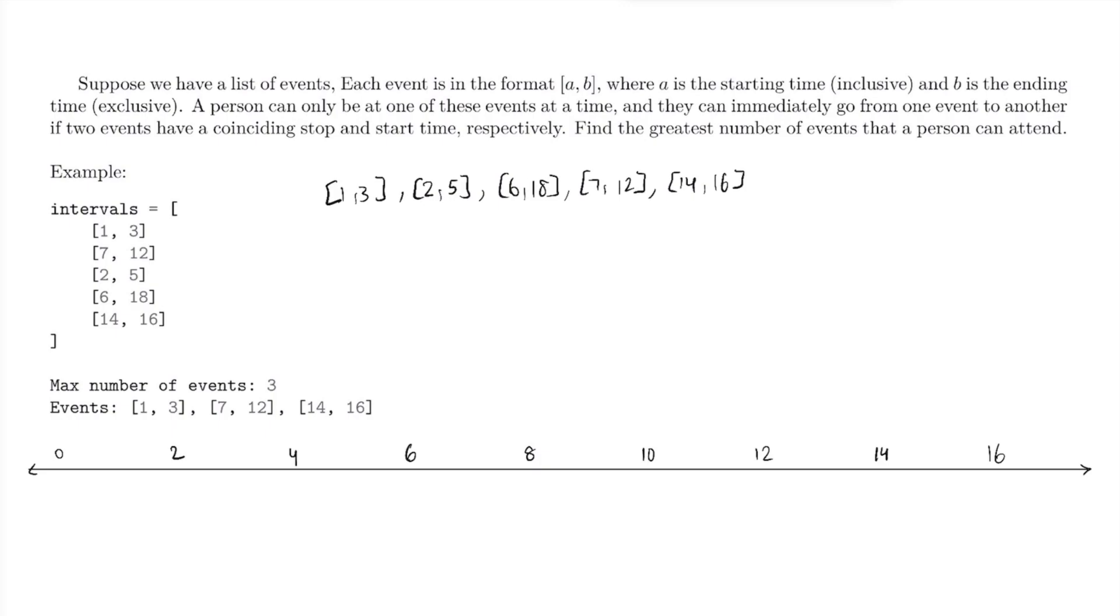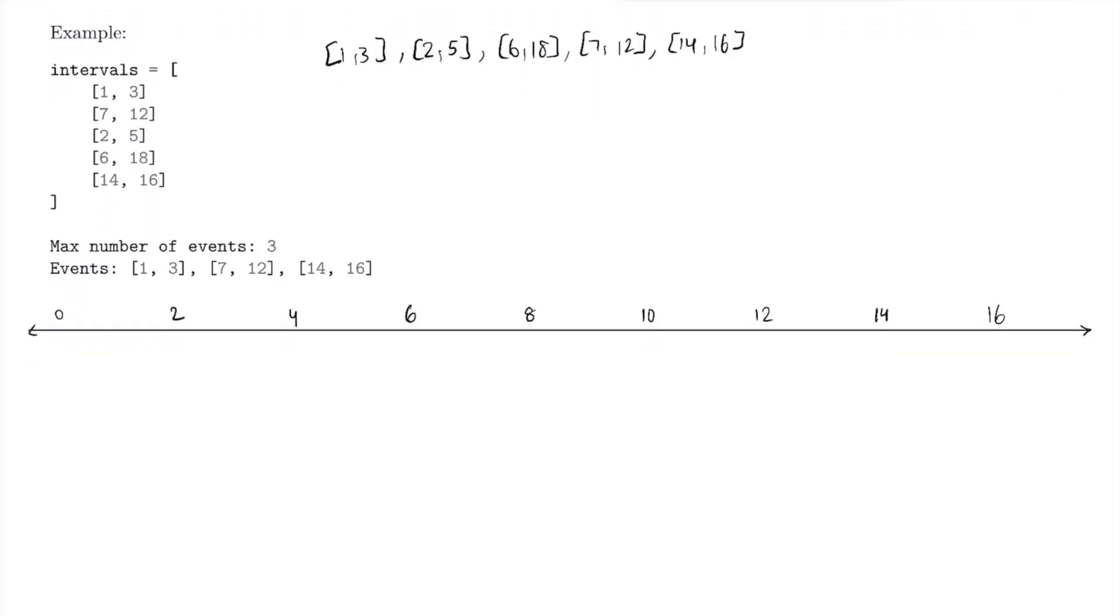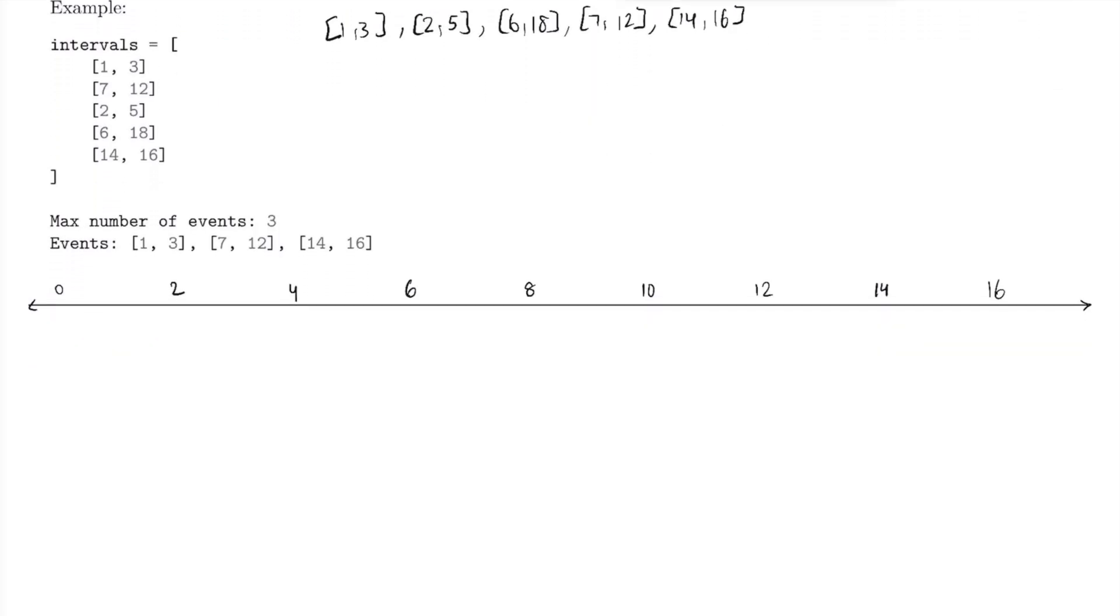Let's draw out our events on this number line. We'll say that for each of these line segments, the start will represent the starting time, and the end will represent the ending time. So for example, we can say that (1,3) goes from here to here, and then (2,5) goes from here to here, and then (6,8) goes from here all the way to around here, and then (7,12) goes from the middle of 6 and 8 all the way to 12, and then (14,16) goes from here to here.